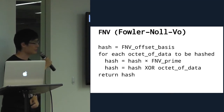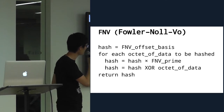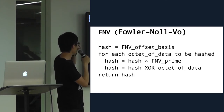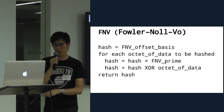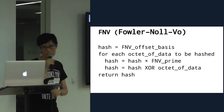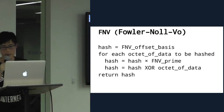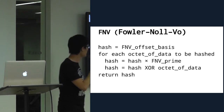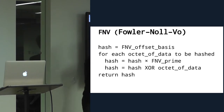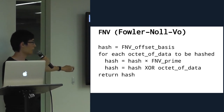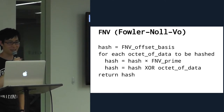FNV — Fowler-Noll-Vo — is very similar to DJB except it changes the addition to an XOR. That and multiplication by a prime tends to make hash functions have good avalanche behavior. I don't know why — I'm not a mathematician — but I trust the internet on this.